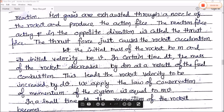Now, the derivation equation is like this. Let the initial mass of the rocket be m and its initial velocity be v. In a certain time dt, small interval of time dt, the mass of the rocket decreases by dm as a result of fuel combustion.